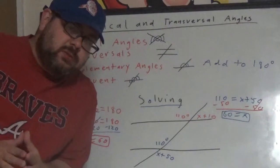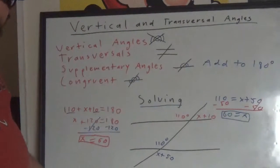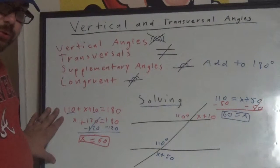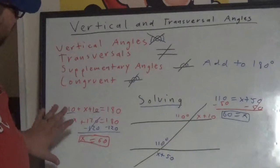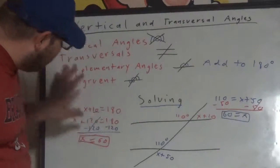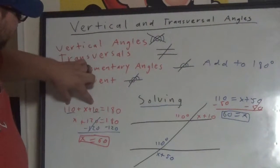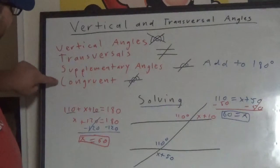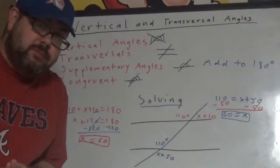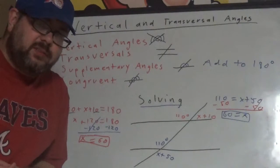That is all I'm going to go into when it comes to vertical and transversal angles. We're mostly in our class going to focus on solving these. Solving them should be very easy. But remember, they're either supplementary angles, which you add together and set equal to 180, or they are congruent angles, where you set them equal to each other. If you do that, solving these is a breeze. Thanks for watching and have a nice day.